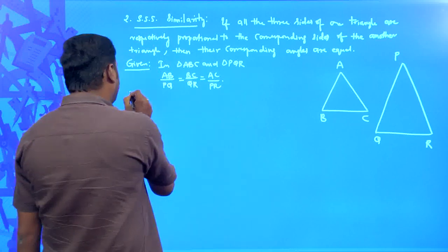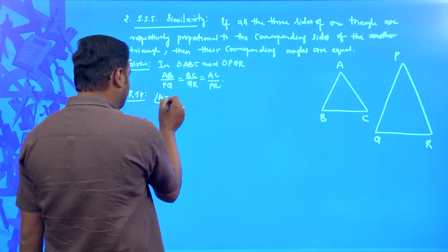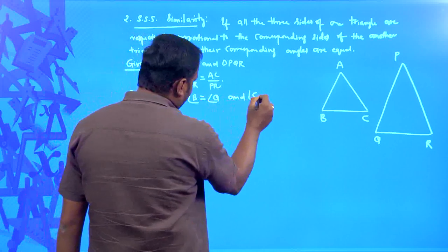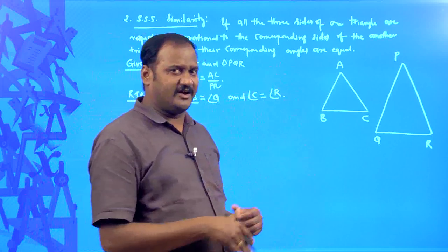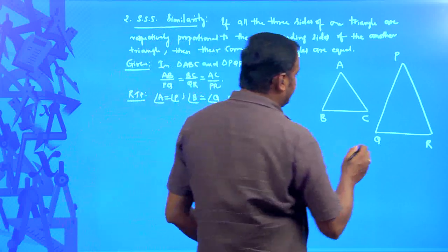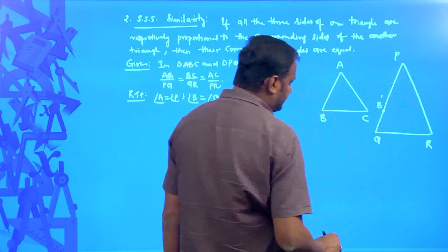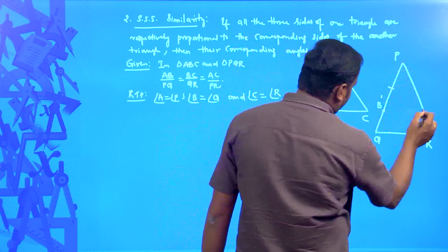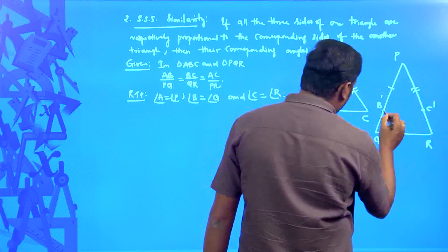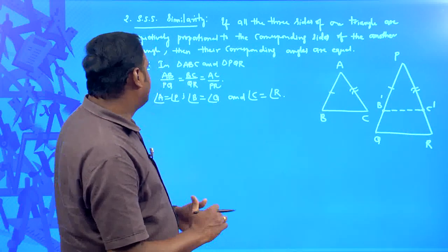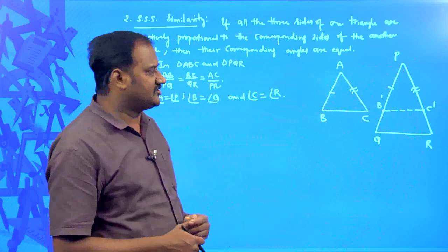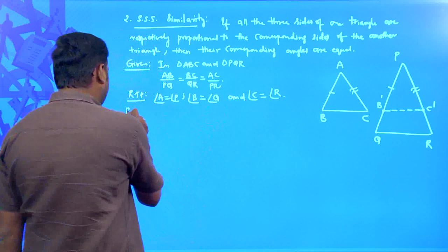We are going to prove that their corresponding angles are equal: angle A = angle P, angle B = angle Q, and angle C = angle R. The construction I used to prove AAA similarity will be used here also — taking a point B' on PQ such that AB = PB', and another point C' on PR such that AC = PC', and then joining B'C'.